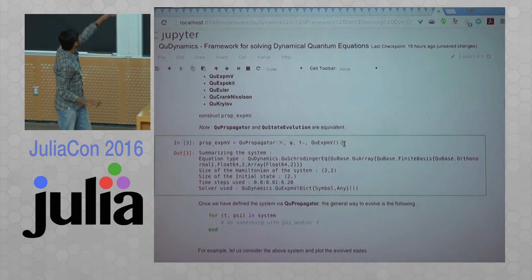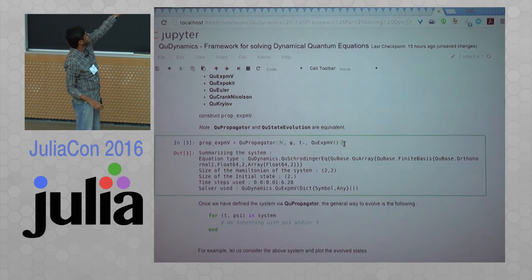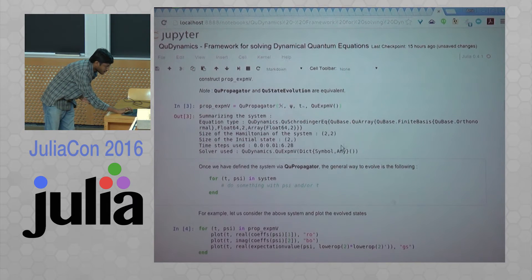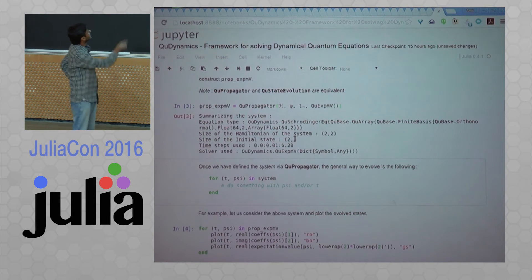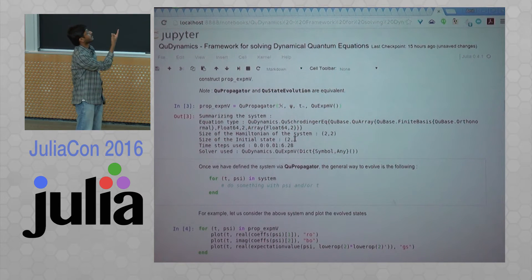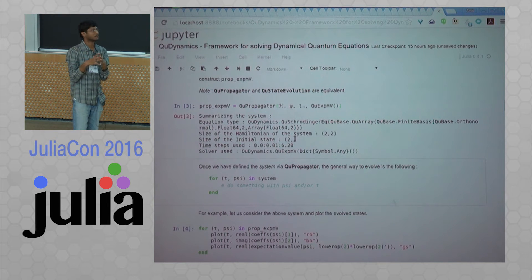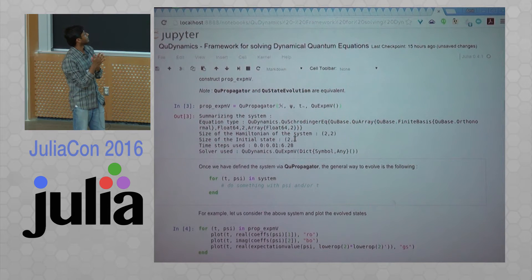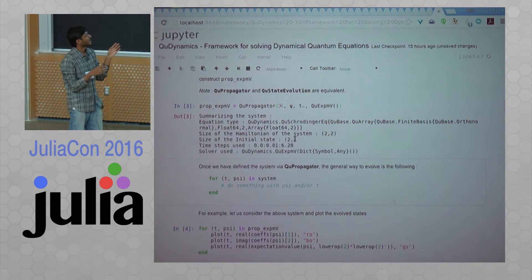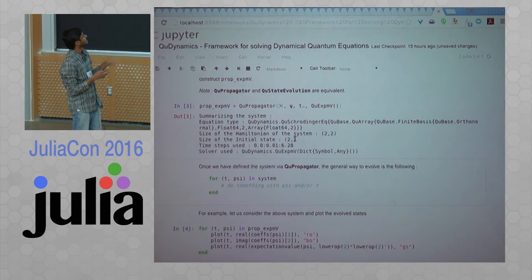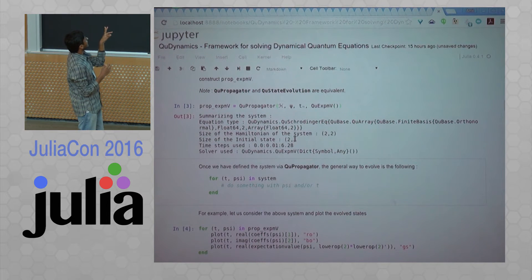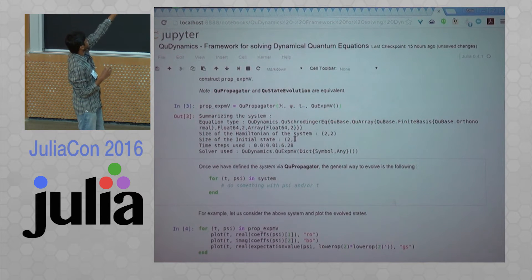So we define the system using the Hamiltonian, the initial state psi, the time steps, and the solver. That summarizes the system. Basically, it recognizes the Hamiltonian as a Schrodinger equation. We have put everything into three equation types: Schrodinger equation, von Neumann equation, and Lindblad master equation, which are basically different systems. You do not need to specify the system because internally we have converted it into a system. We recognize it as a system.